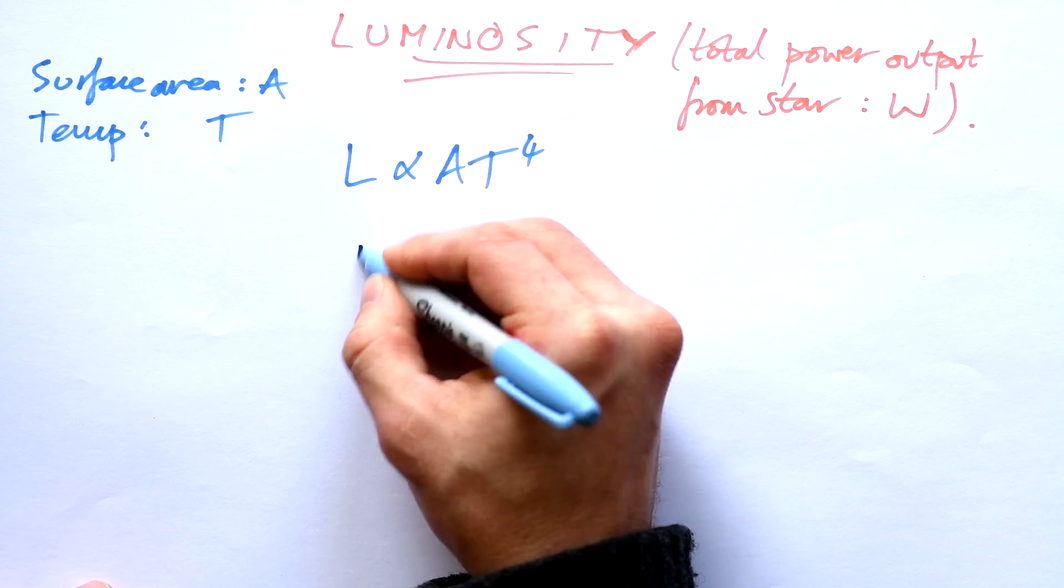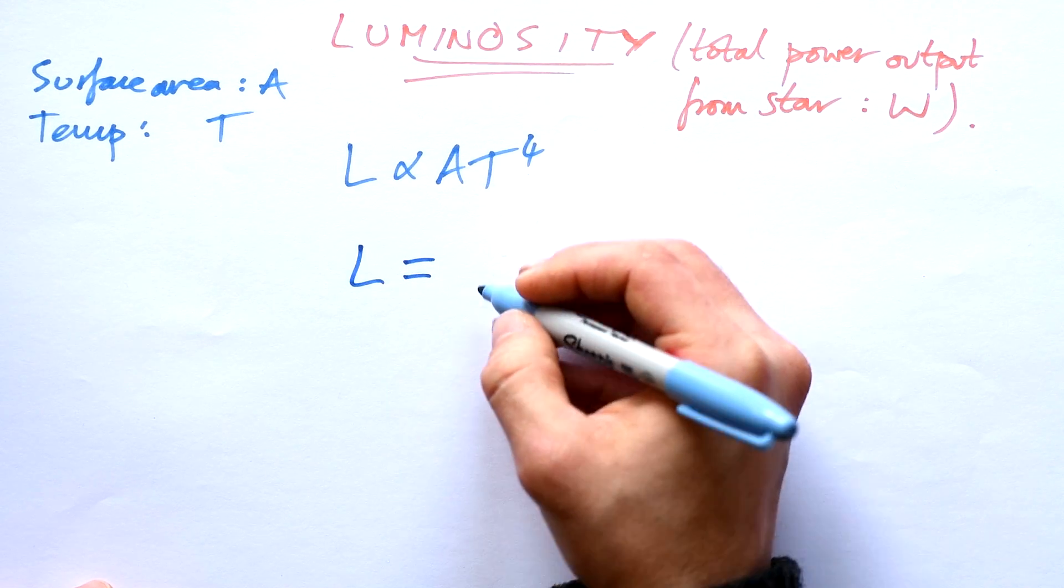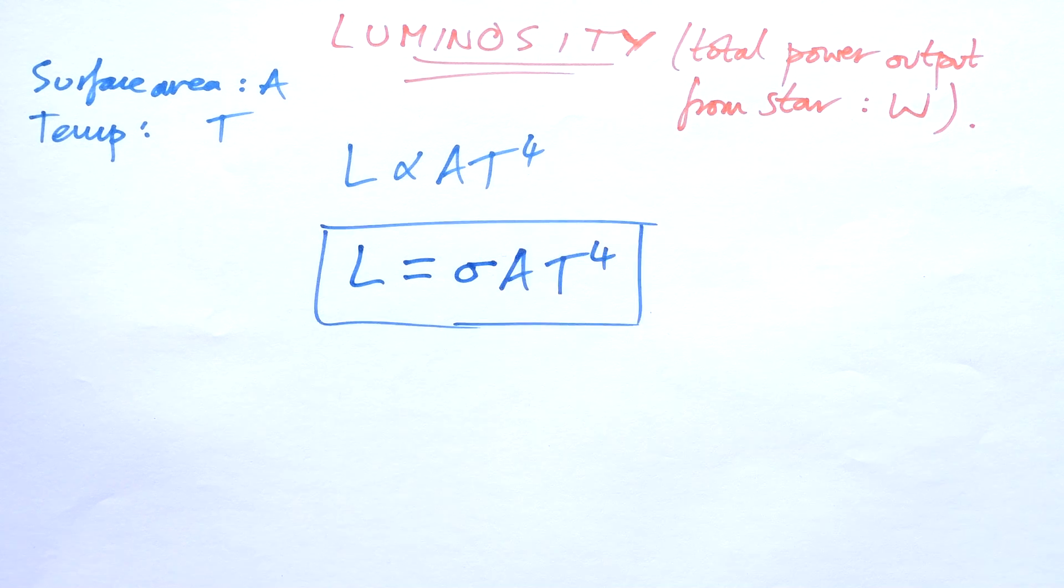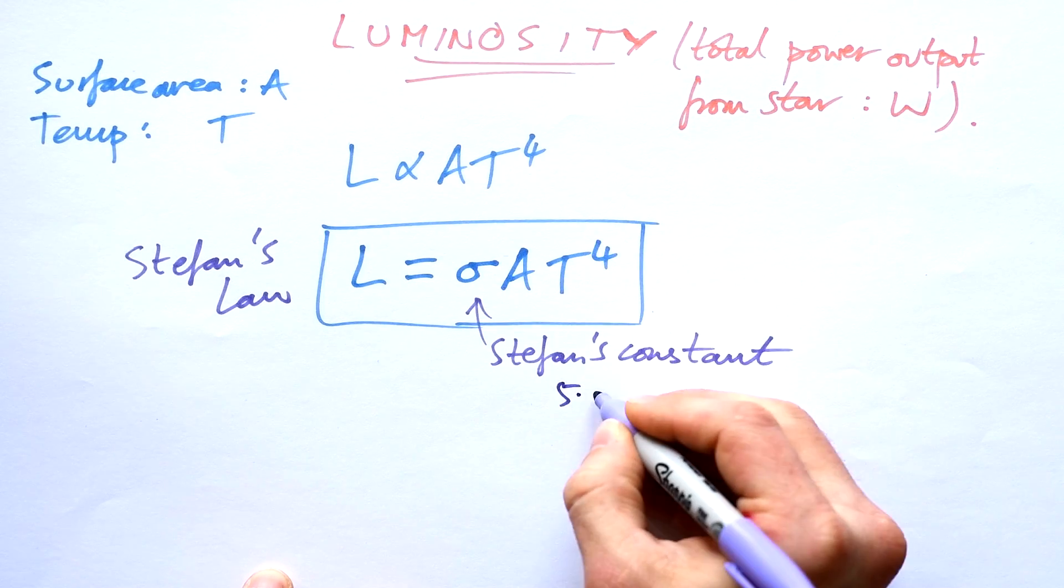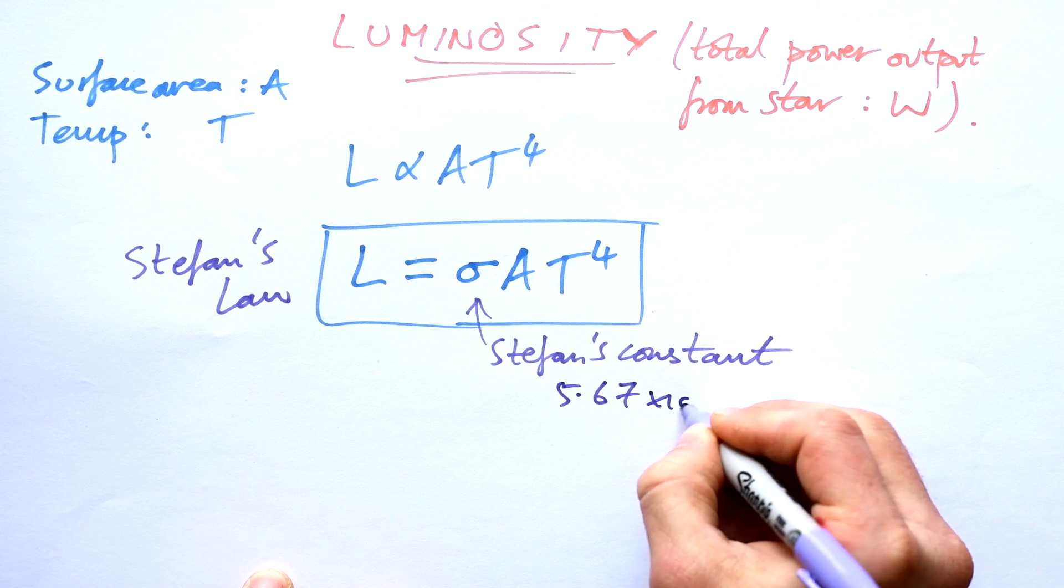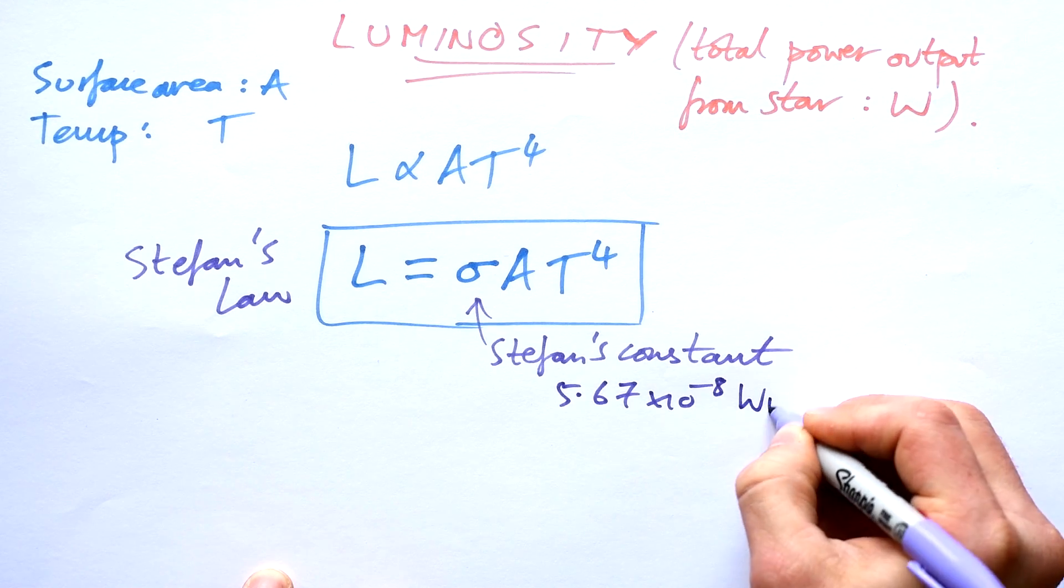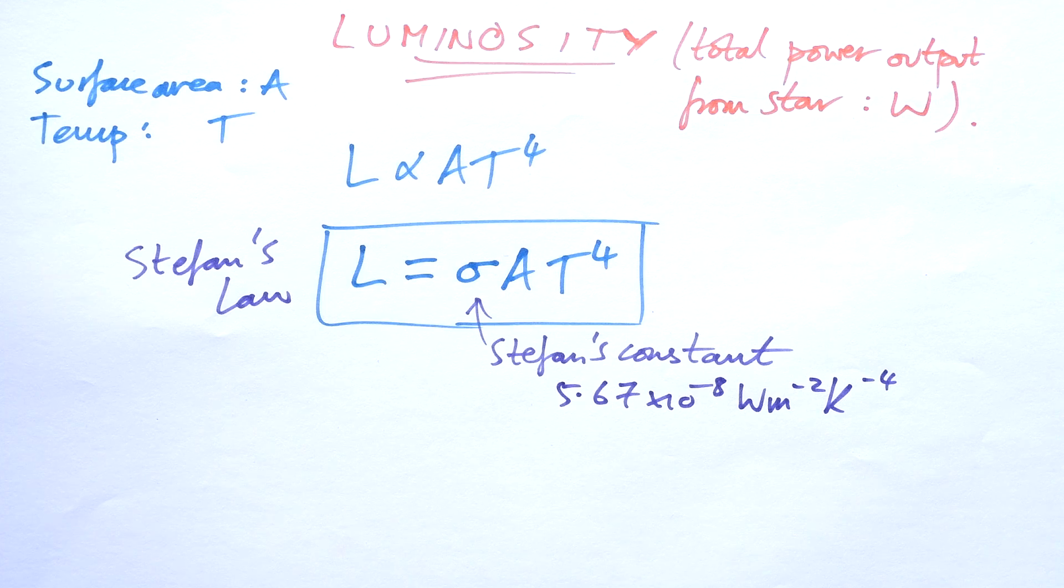To turn this into an equation, we need the constant, and so that is sigma, and that is Stefan's constant. And in fact, this is Stefan's law. And you're given Stefan's constant, but that ends up being 5.67 times 10 to the minus 8 watts per meter squared, Kelvin to the minus 4.